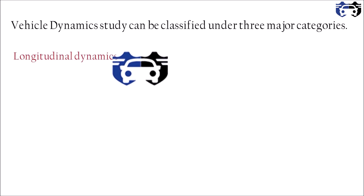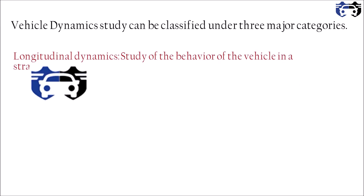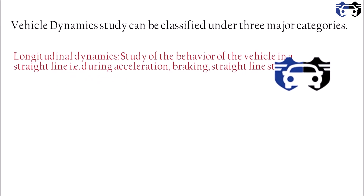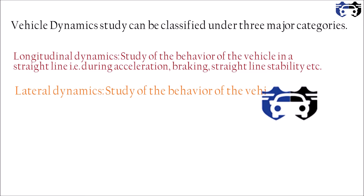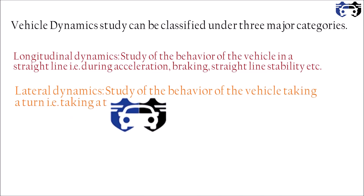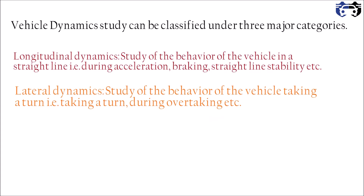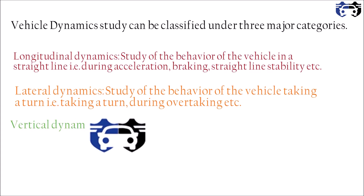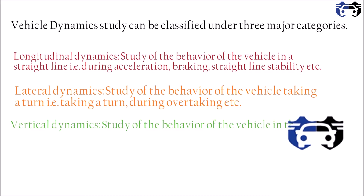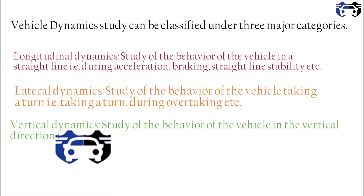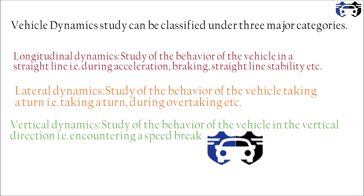Vehicle dynamics study can be classified under three major categories. The first is longitudinal dynamics — the study of the behavior of the vehicle in a straight line, including acceleration, braking, and straight-line stability. The second is lateral dynamics — the study of the behavior of the vehicle while taking a turn or during overtaking, where lateral forces are involved. The third is vertical dynamics — the study of the behavior of the vehicle in the vertical direction, such as when encountering a speed breaker or a pothole, where road-holding capacity is measured.